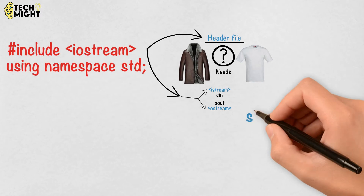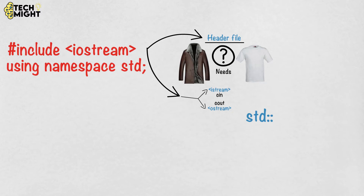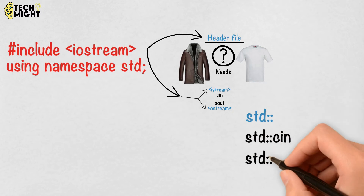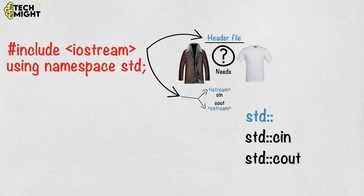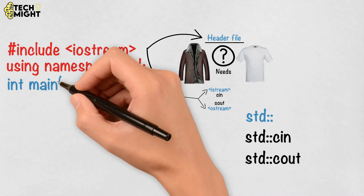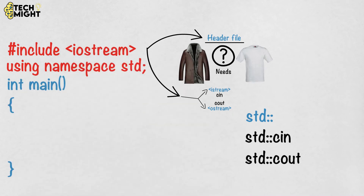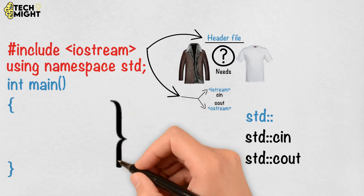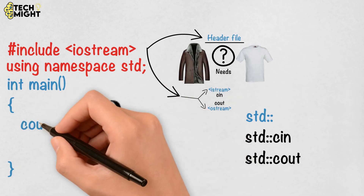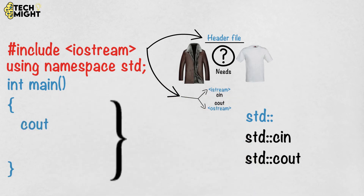If you don't write the namespace line, then you will have to write it before every standard keyword. This is the main function — every program should contain a main function. Everything you write in the scope of the main function is executed. cout is the keyword which tells the computer to display something on the screen or console.